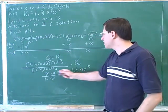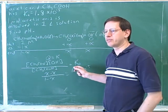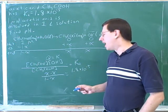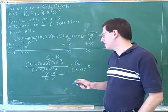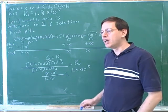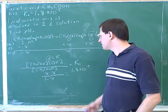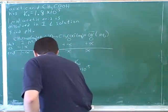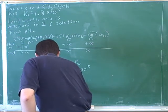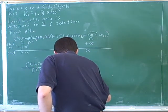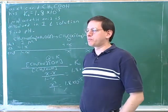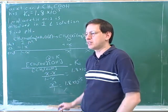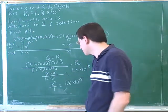Now remember the trick from class. If you try to solve this, you'll get a quadratic equation, which you can't solve without the quadratic formula — which maybe in your course you're not expected to do on tests. So we have to make an approximation. Because this is a weak acid, we can expect x to be small, and then 1 minus x should be about the same as just 1. For example, if x was 0.0001, then 1 minus 0.0001 is just about the same as 1. So then we have that x is the square root of 1.8 times 10 to the negative 5.